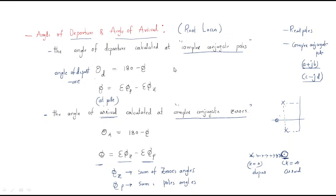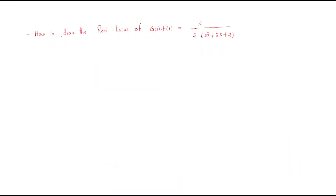This is the theory behind angle of departure and angle of arrival. Next we will discuss one problem on root locus: how to draw the root locus for G(s)H(s) = K / [s(s² + 2s + 2)]. This is the given open loop transfer function.